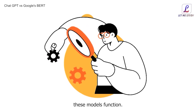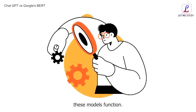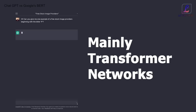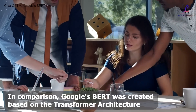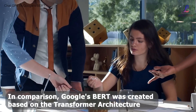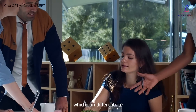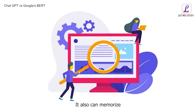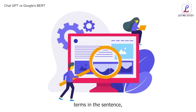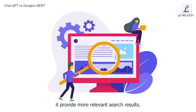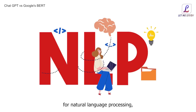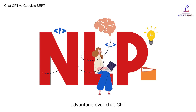Another difference is the way these models function. ChatGPT is based on artificial neural networks, mainly transformer networks. Google's BERT was created based on the transformer architecture, which can differentiate between the preceding and following text in a sentence. It can also memorize terms in the sentence, which helps it provide more relevant search results. Google's BERT uses the method of extracting data from the web for natural language processing, which is an excellent advantage over ChatGPT.